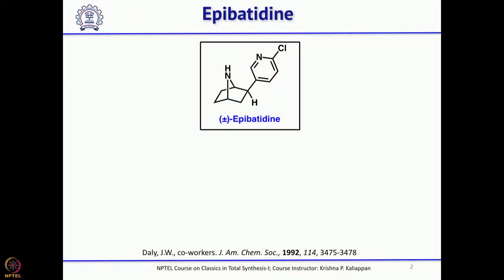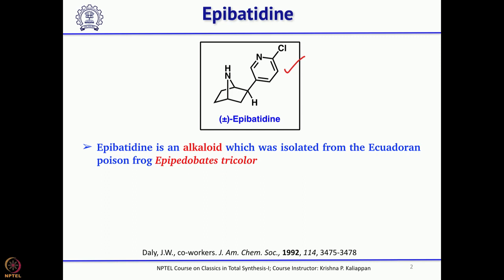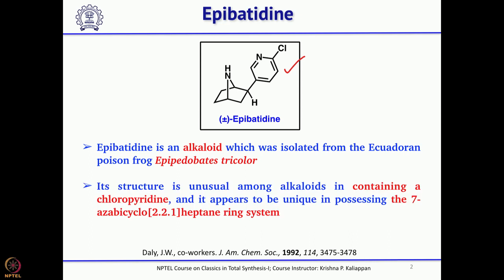As you can see here, it is a bicyclic compound having a substituted pyridine attached to the aza-bicyclo compound. This compound was isolated from a poisonous frog in Ecuador. Earlier we all know that strychnine was the most poisonous compound isolated in nature, but epibatidine is more poisonous than strychnine. It also shows analgesic activity at 1/200 the dose of morphine, making it much more active than morphine.